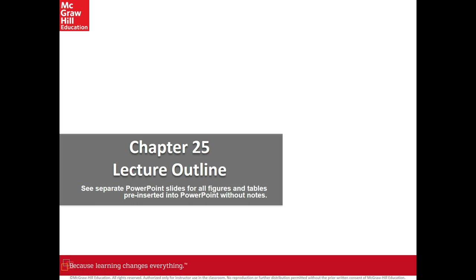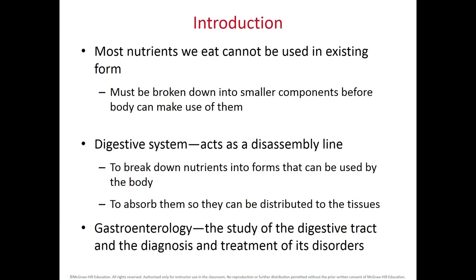Chapter 25 is about the digestive or gastrointestinal system. When we ingest food, most of it cannot be assimilated as it is, so it has to be broken down into smaller components that our body can use. The digestive system acts as a disassembly line in which nutrients go through different parts, and with the aid of enzymes or organs, we break them down into smaller parts that are ultimately absorbed by the circulatory system and distributed throughout the body.